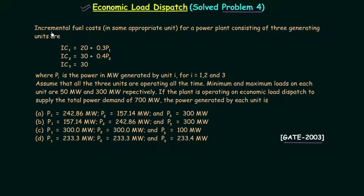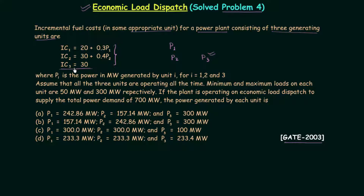You can see the problem on your screen. The incremental fuel cost in appropriate units for a power plant consisting of three generating units are given. IC1 is the incremental cost of the first generator, IC2 of the second, and IC3 of the third, expressed as functions of Pi — the power in megawatt generated by unit i, for i = 1, 2, and 3. IC1 is a function of P1, IC2 is a function of P2, but IC3 is simply equal to 30 — it is independent of P3.